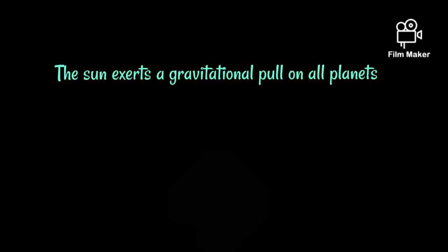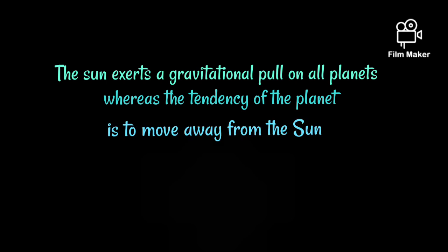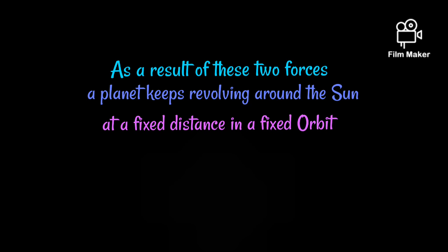The sun exerts a gravitational pull on all planets, whereas the tendency of the planets is to move away from the sun. As a result of these two forces, a planet keeps revolving around the sun at a fixed distance in a fixed orbit.